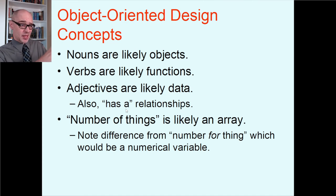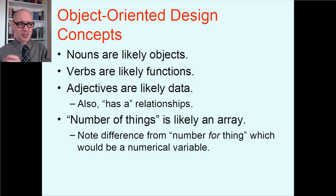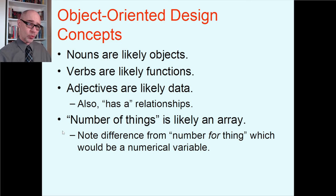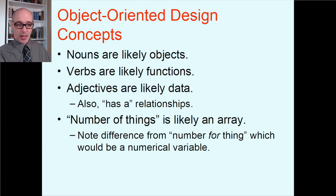If you ever see the phrase 'has a,' that's probably indicating the member data for the object. A car has four wheels and several windows and some seatbelts — probably that other stuff is the member data for a car. Now be careful: if you see 'number of things,' like a car has four wheels, that's likely an array. You can have member variables that are themselves arrays inside the object. A deck of cards has 52 different cards, so you'd probably need an array of size 52 for all the cards in a deck.